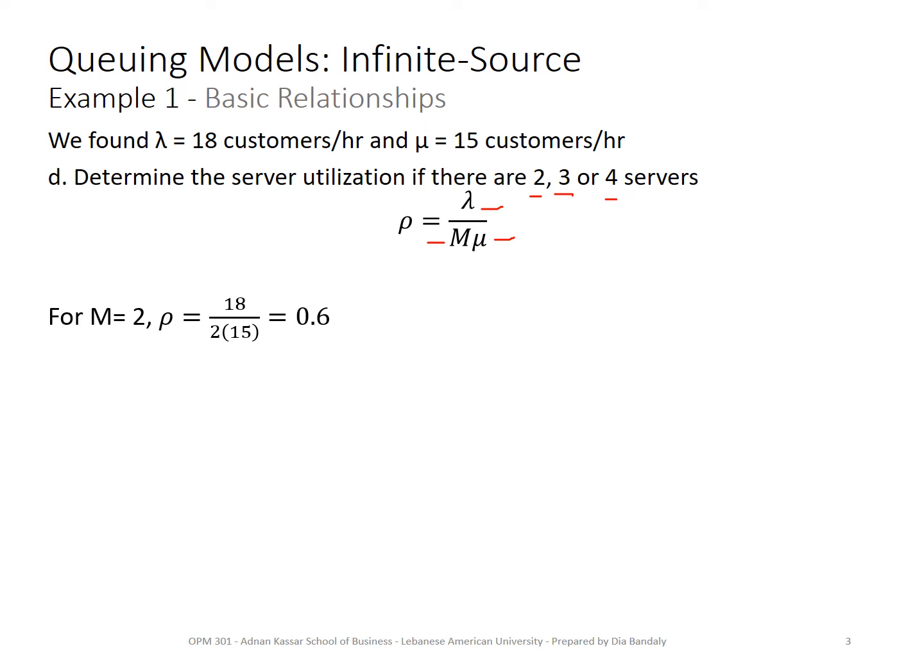What does it mean 0.6? Interpret it. That means a server on average would be busy 60% of the time. If we had three servers, what do you think would happen to the percentage of time he's busy? Before you do the calculation, it should decrease, of course, because we have now more servers for the same arrivals. So certainly the rho will be less. And here we go. Now it's 40% of the time. He will be busy 40% of the time only.